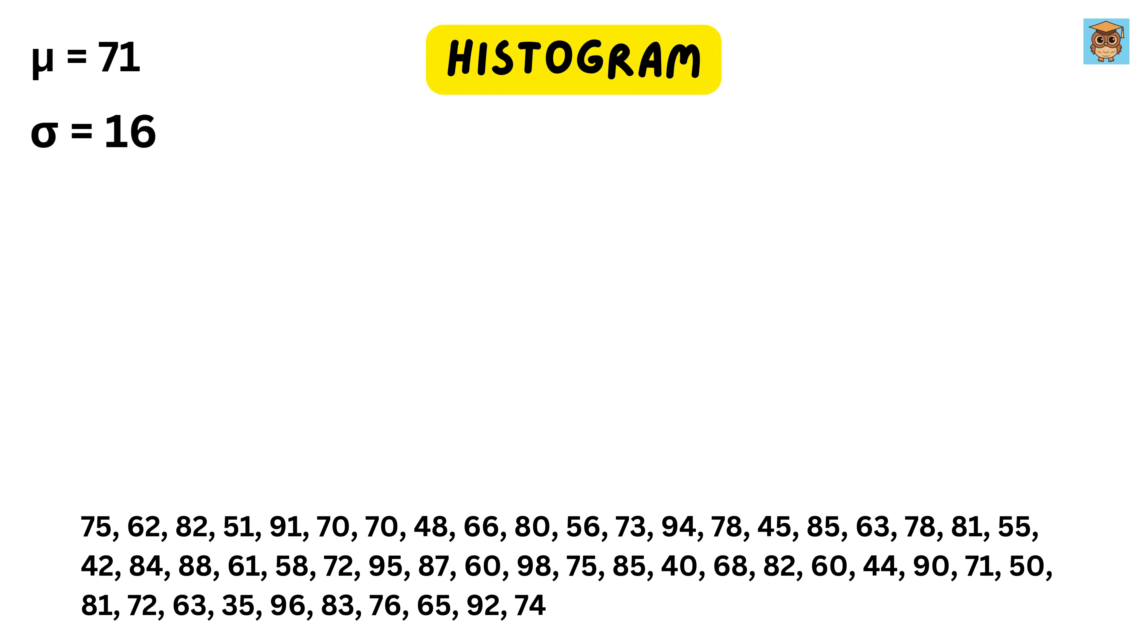Now, looking at numbers alone is hard, so let's make a picture of the data using a method called histogram. A histogram is like a bar chart where we group the marks into ranges and count how many students fall into each range. In our class, only one student scored between 30 and 40, while five students scored between 40 and 50. As we move higher, we see that five students fall within the 50 to 60 range. The most common scores are between 60 and 90, where between 60 and 70 we have nine students, between 70 and 80 we have 12, and between 80 and 90 we have 11 students. As we go even higher, only seven students achieved marks in the 90 to 100 range.